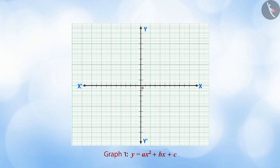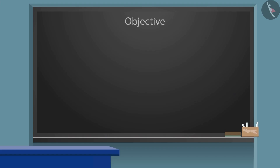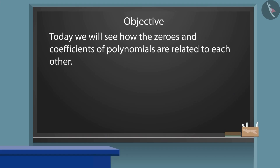Welcome to this video. So far, we have read about the geometric meaning of the zeros of a polynomial. Today, we will see how the zeros and coefficients of polynomials are related to each other.